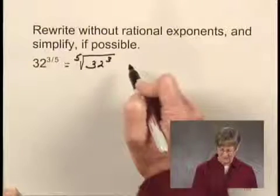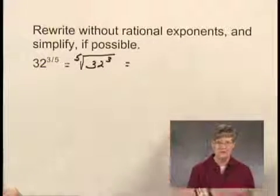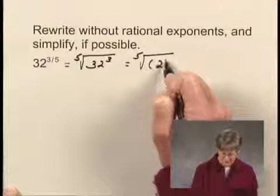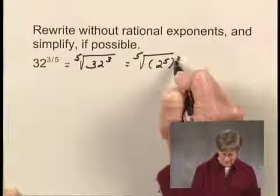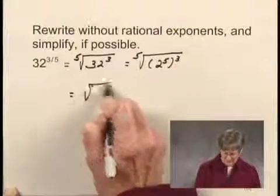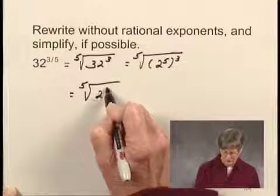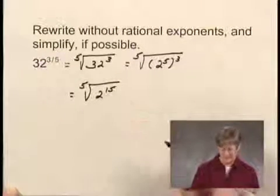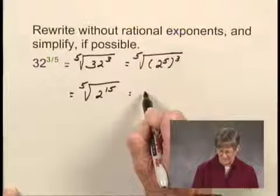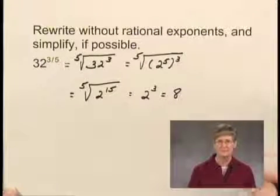Now we need to simplify this, if possible. Take a look at 32 — we know that 32 is 2 to the fifth power, so I can write this as the fifth root of 2 to the fifth power raised to the third power. I multiply exponents here: I have 2 to the fifteenth power, and 15 is 3 times 5, so that tells me this is equal to 2 cubed, or 8.